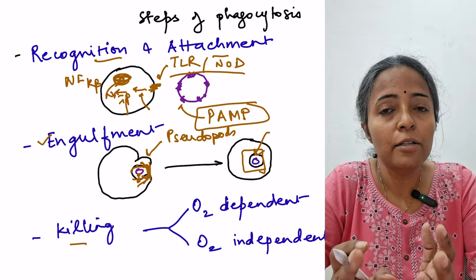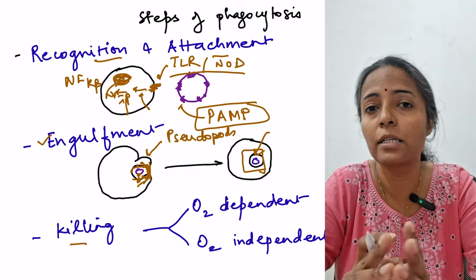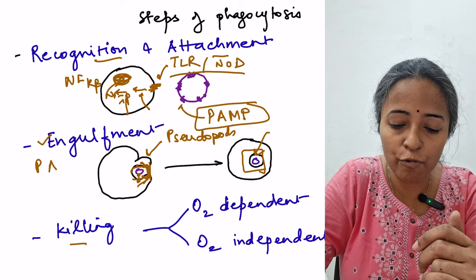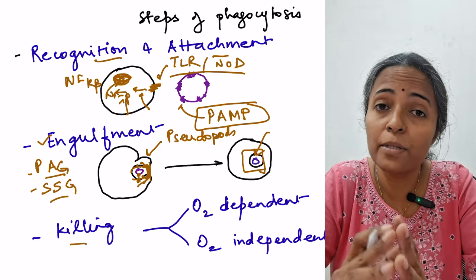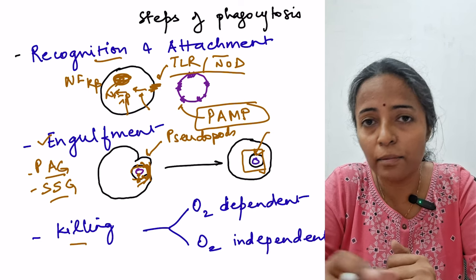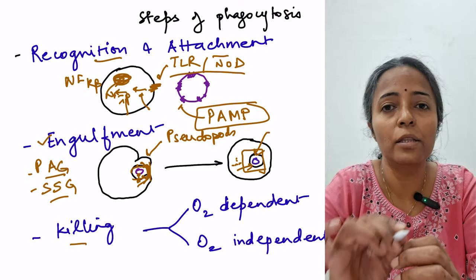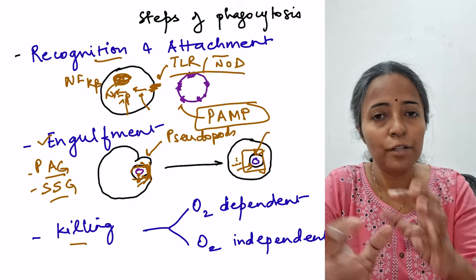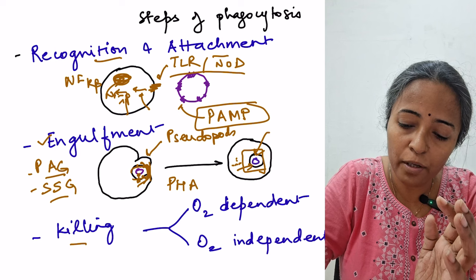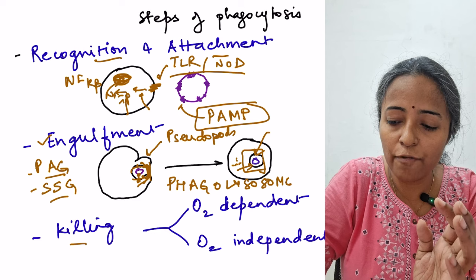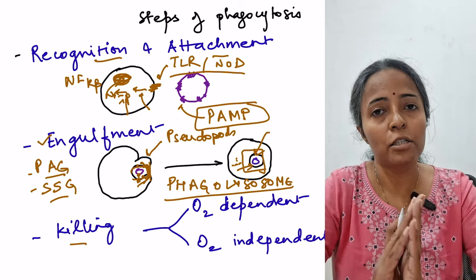Neutrophils and macrophages contain intracellular killing structures: macrophages have lysosomes, while neutrophils have primary azurophilic granules and secondary specific granules. These granules contain enzymes and proteins capable of killing ingested bacteria or foreign agents. The granules of neutrophils fuse with the phagosome membrane; in macrophages, lysosomes fuse with the phagosome to form a phagolysosome, inside which killing of the ingested particle occurs.